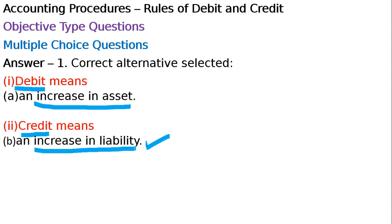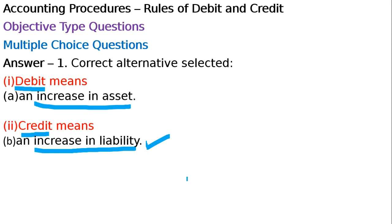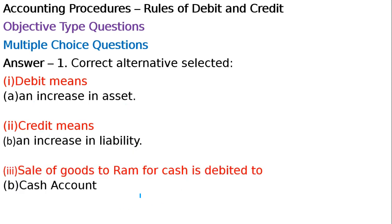Third question: Sale of goods to Ram for cash is debited to which account? Ram ko cash se goods becha, to cash aya aur sales badha. Modern rule ke hisab se, increase in asset is debited. Cash badha hai, cash aya ka asset hai, so increase in asset is debited — cash account debited hota hai. So the answer is option B: cash account is debited, because increase in asset is debited.